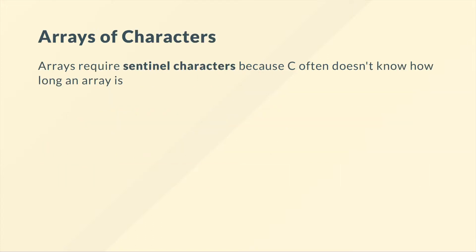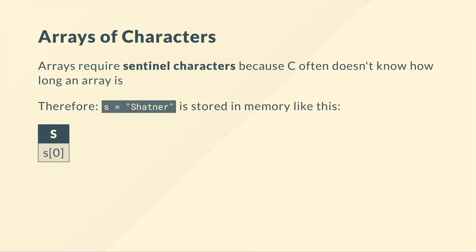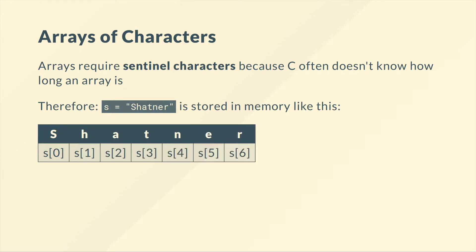Arrays in C require a sentinel character because C often doesn't know how long an array is. If we have a string or array of characters — for example, s equals "Shatner" — in memory it will be stored element by element. Remember, we always index from 0. So the first element is 'S', then 'H', 'A', 'T', 'N', 'E', 'R', and then the last character is the sentinel character, which is a backslash zero. When C sees that, it knows it has reached the end of the array.